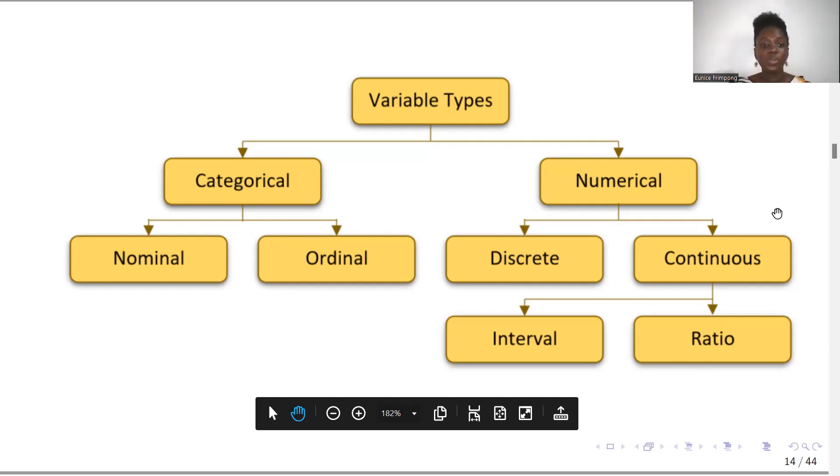Under categorical variables, we have nominal and ordinal. And under numerical variables, first of all, we have discrete and continuous. And then under continuous, we have interval and ratio. So please follow the flowchart very well. First of all, these are variable types. And then there are two major types, which are categorical—another word for categorical is qualitative—and then the numerical variables, another word for it is quantitative. And under categorical variables, which is the qualitative variables, we have nominal and ordinal variables. And then under numerical variables, we have discrete and continuous variables. Then under continuous variables, we also have interval and ratio variables. So this is a good picture for you to appreciate the various types of variables that there are.